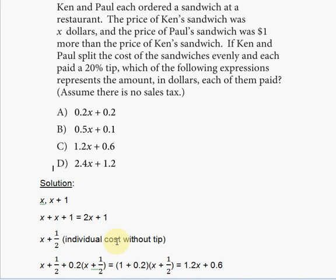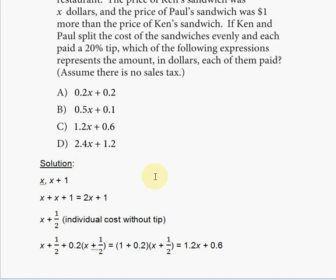And now each of them decides to add a twenty percent tip. So let's see—this is what they pay without the tip: X plus one-half dollars. And then this is the tip: plus twenty percent of X plus one-half dollars.